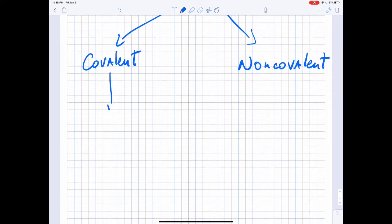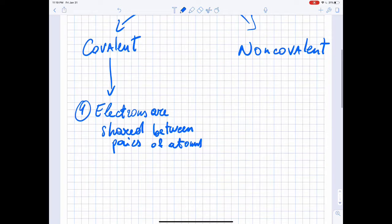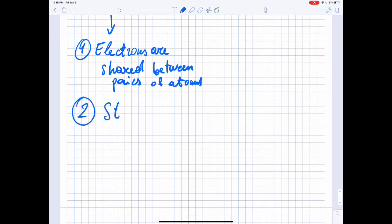In covalent bonds, electrons are shared between pairs of atoms. The second characteristic about covalent bonds is that they are very strong bonds.